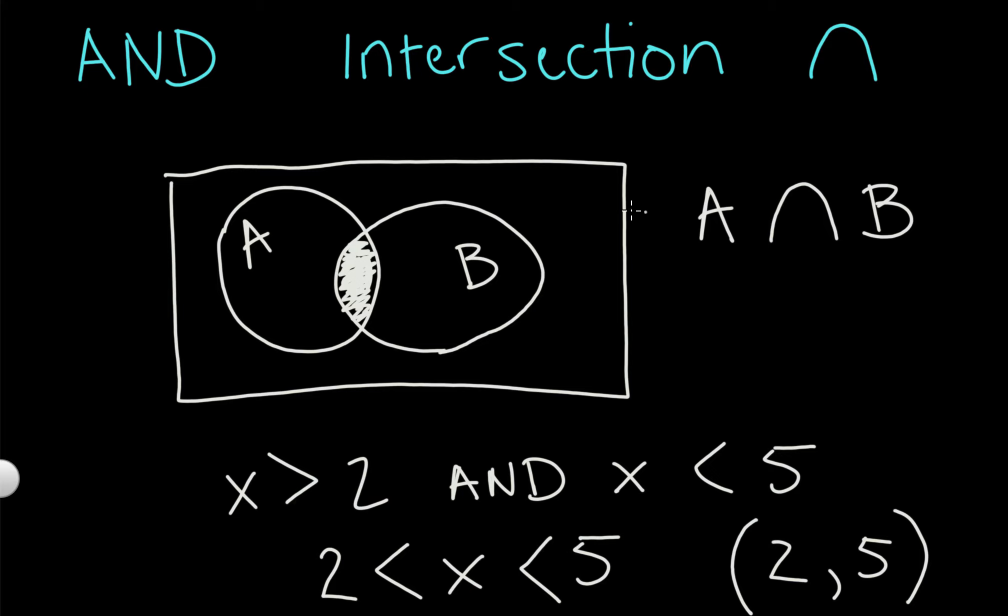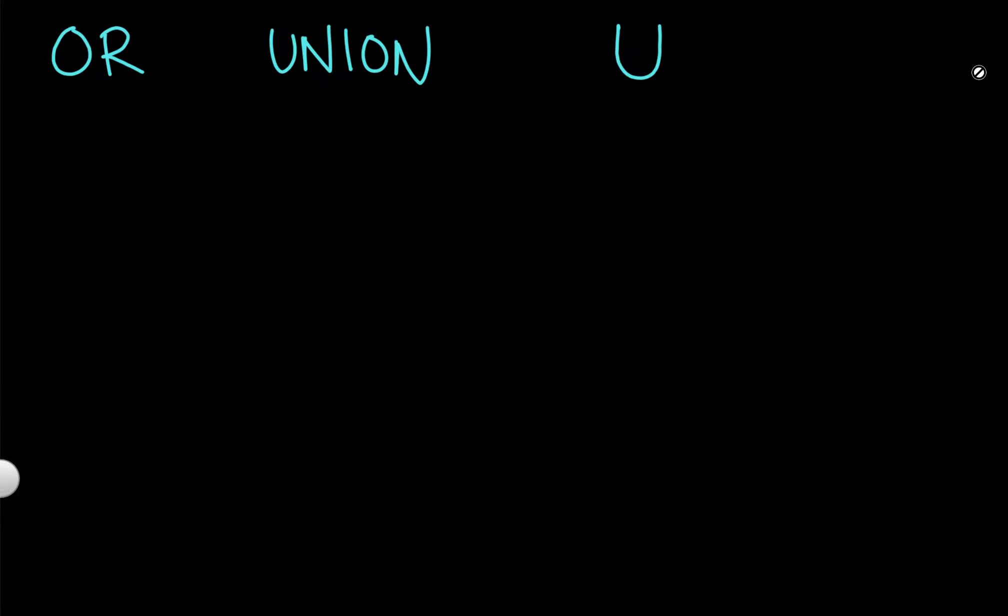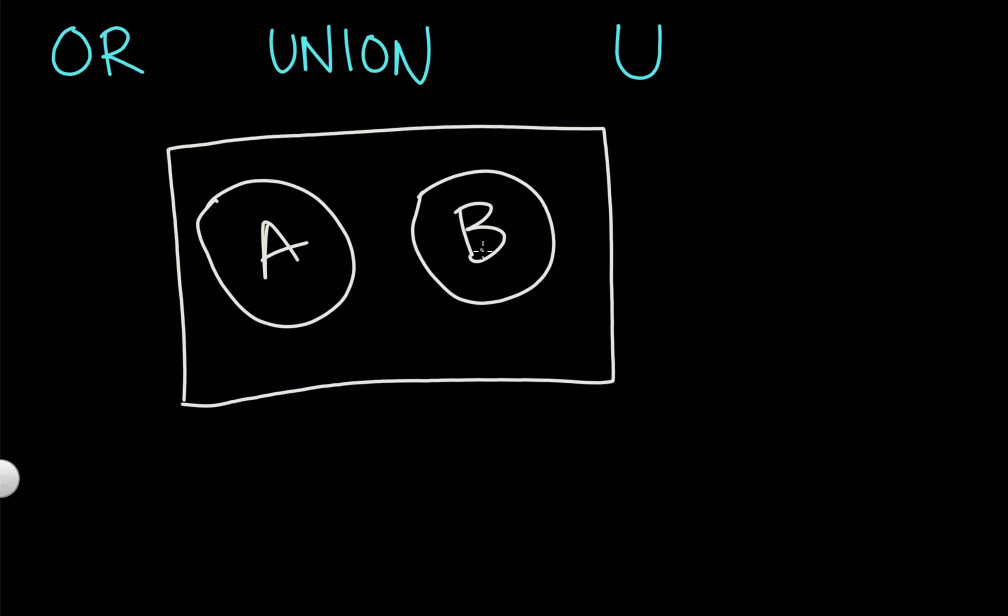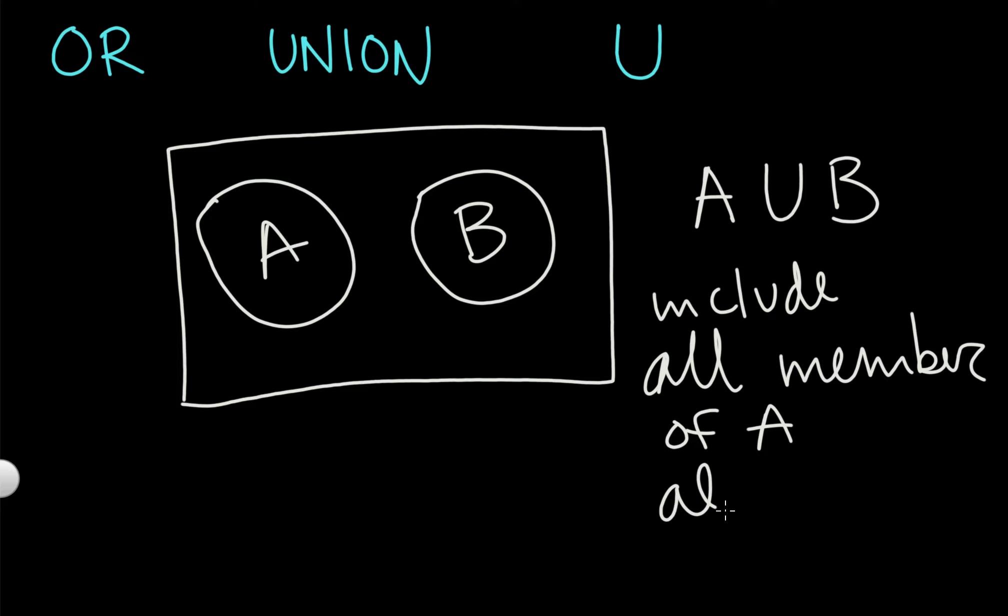We can also combine sets using OR. Now, OR means that it only has to satisfy one of the sets, one of the descriptions, one of the inequalities, whatever you're using. So if I look at A and set B, even if there's nothing the same, even if there's no overlap, A unioned with B would include all the members of A and all the members of B.